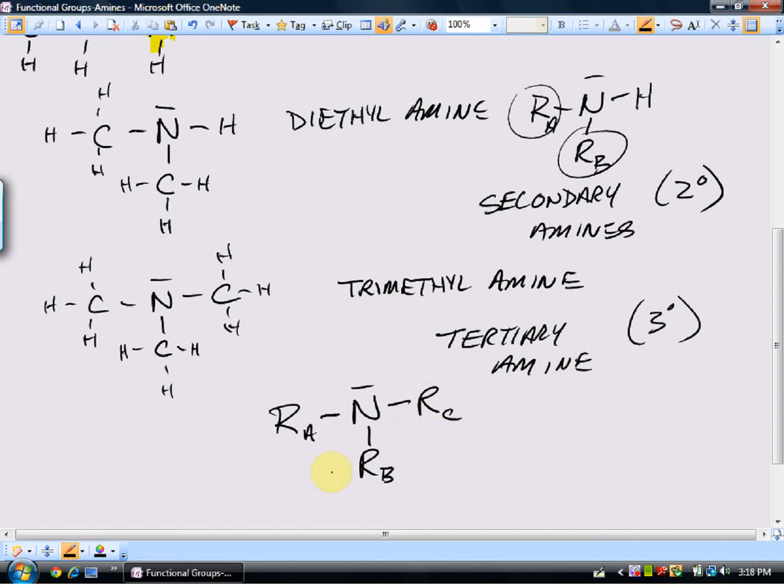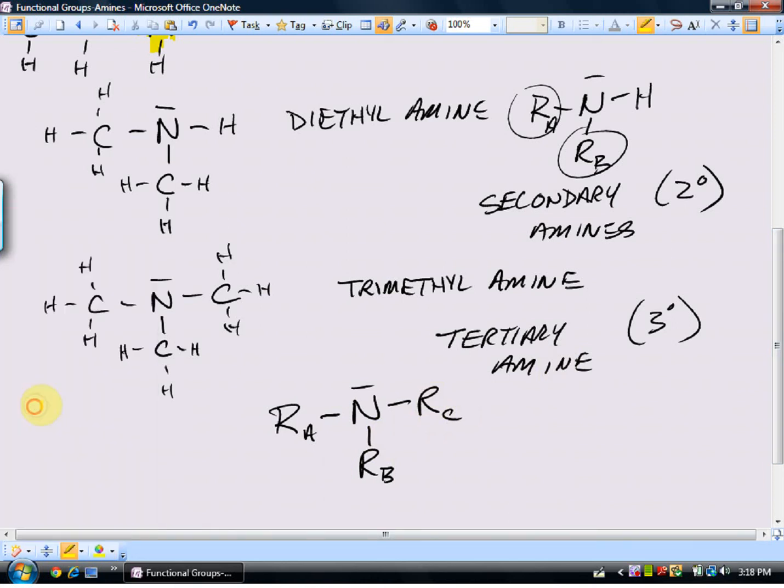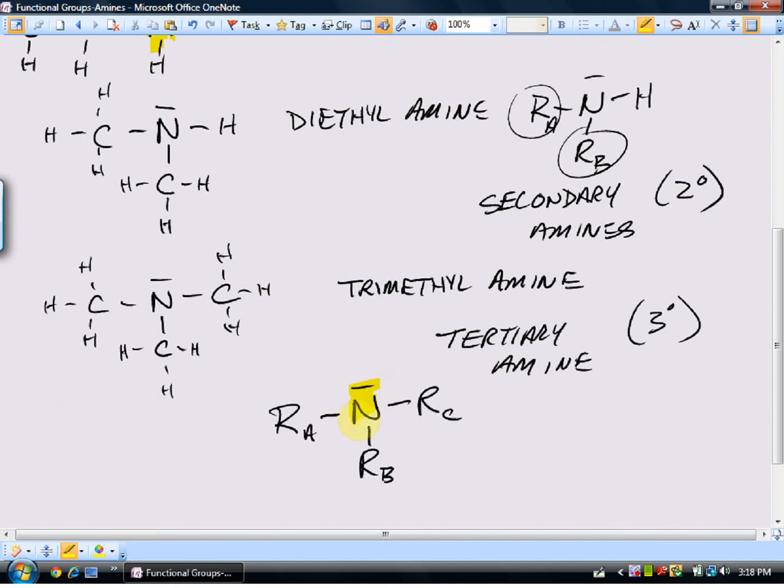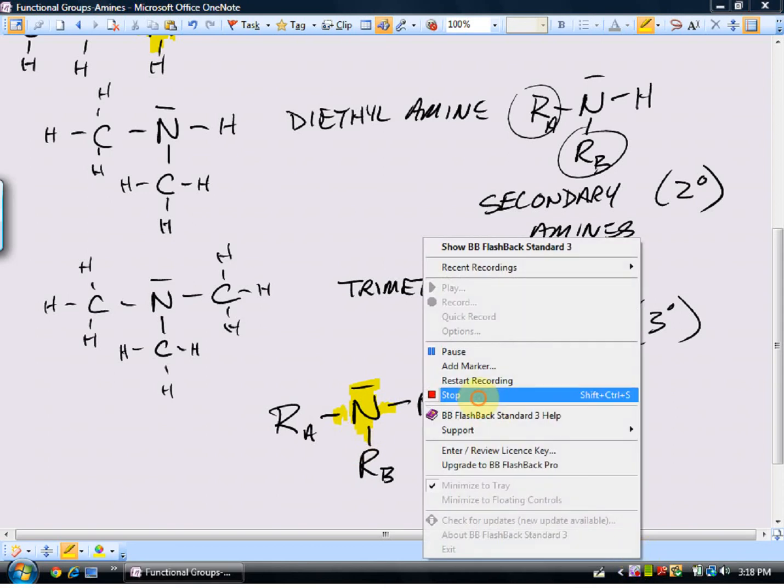So amines are derivatives of ammonia, and they are characterized by having a nitrogen with at least one of the connections to the nitrogen being a carbon group. Those are amines. One more functional group to go. Let's go.